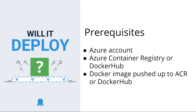Now there are a few prerequisites. The first is of course an Azure account, because we are deploying to an Azure app plan or Azure web app. You're going to need at least an ACR or Docker Hub — you can put your Docker image in any Docker registry you want to use. And that Docker image must also be pushed to the Docker registry that you decide to use. With that, let's jump right into the demo and get started.